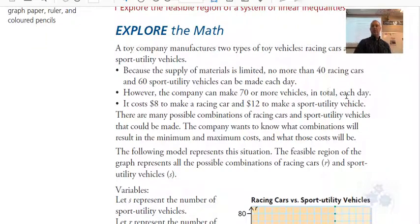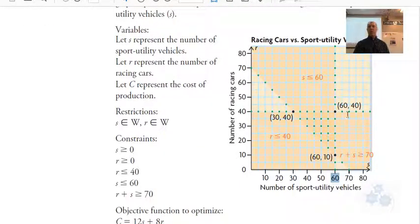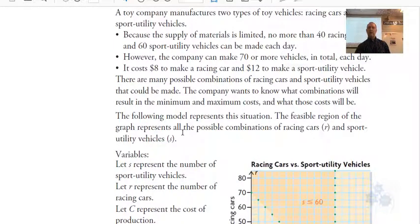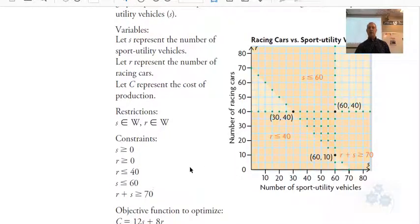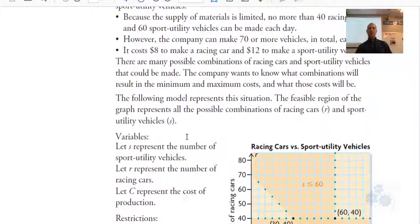However, the company can make 70 or more vehicles in total each day. Do we see that anywhere on this graph? If you look at the constraints here, R plus S is greater than or equal to 70. Here it is, this oblique line right here, and the region is above that line. So far we've got this little part right here. The other constraints are S is greater than or equal to zero and R is greater than or equal to zero, so we can't make a negative number of cars. We're dealing with quadrant one, this first quadrant.